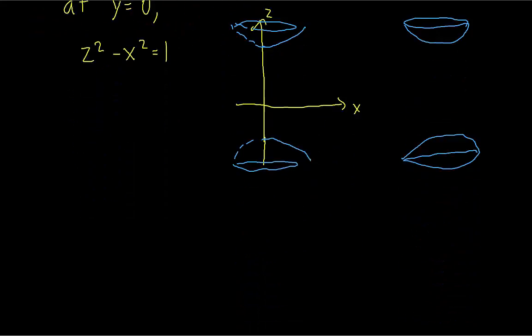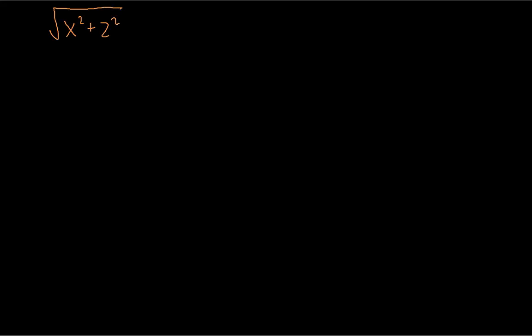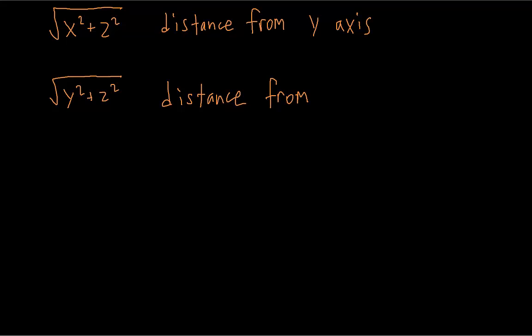This technique doesn't just work with the z-axis. The square root of x squared plus z squared signifies the distance from the y-axis of any point, and the square root of y squared plus z squared is the distance from the x-axis of any point. Just like with the distance from the z-axis, if we can rewrite an equation in terms of y and the distance from the y-axis, it must have rotational symmetry about the y-axis. And if we can rewrite the equation in terms of x and the distance from the x-axis, then it has rotational symmetry about the x-axis.